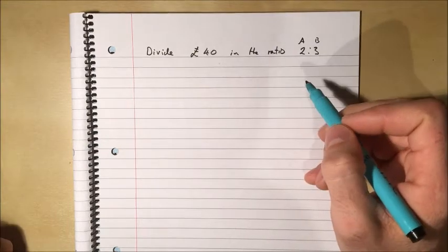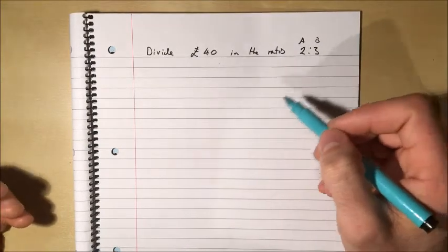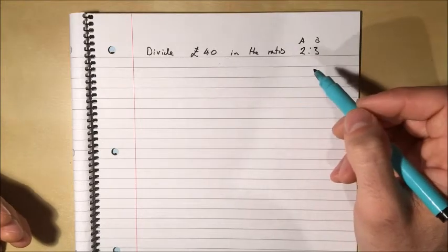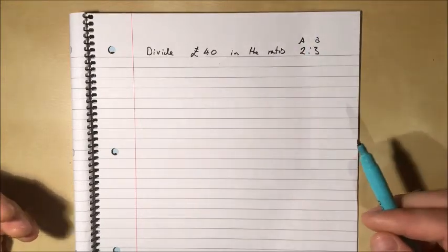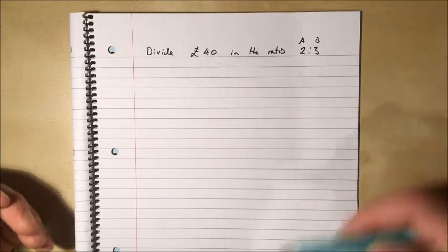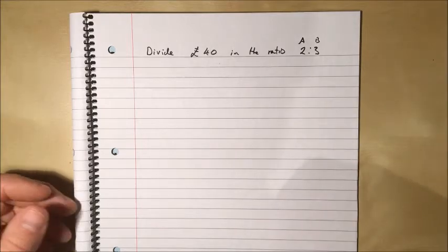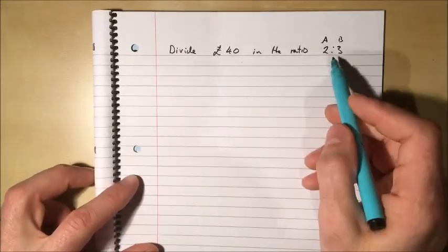Every time person A gets £2, person B gets £3. Now some examples you might be able to work out more or less in your head. I'm going to show you this example with relatively simple numbers so that you've got a method for when the numbers get harder.